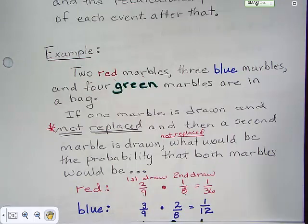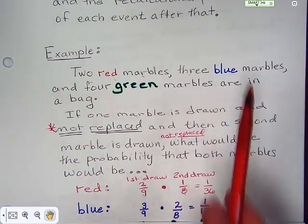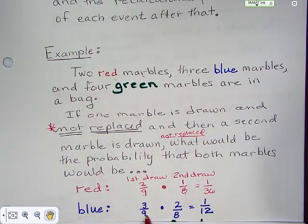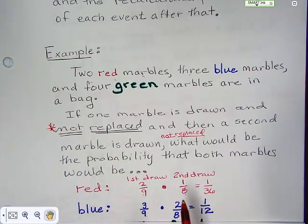We're going to do the blue. If we have three blue marbles, so it's three out of nine, we get that one. Now, we assume we pulled one of those blue out. So, it's two out of eight.